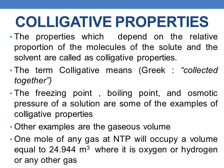The next type is colligative properties. As the term indicates, colligative means collected together. These are properties which depend on the relative proportion of the molecules of solute and solvent. Examples are freezing point, boiling point, and osmotic pressure of a solution. Even gaseous volume is an example — as we know that 1 mole of any gas at NTP will occupy a volume of 24.944 m³, whether it is oxygen, hydrogen, or any other gas. The gaseous volume of 1 mole of gas at NTP is constant.